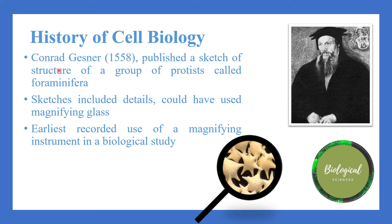Conrad Gessner was another person who contributed to cell biology. He was a Swiss biologist who, in 1558, published a sketch of the structure of a group of protists called foraminifera. Protists are eukaryotic organisms that are not animals, plants, or fungi; they have mitochondria, can be parasites, and prefer aquatic or moist environments. Those sketches included very much detail, which could only have been drawn using a magnifying glass — making this the earliest record of using a magnifying glass in biology.